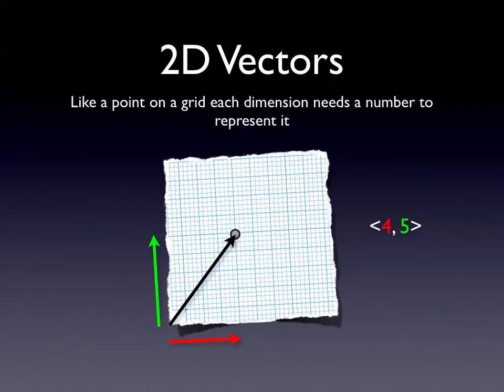That's represented like this: (4, 5) would mean four one way and five the other. There are a million different ways to represent that, depending on how super maths you want to be.